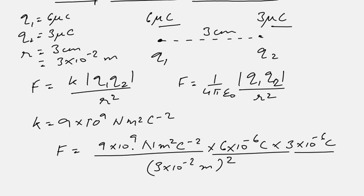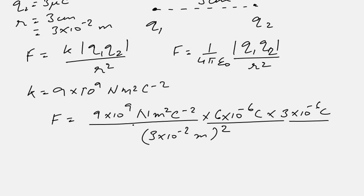Now the first thing is to simplify the units and check whether the resultant unit is the same as the expected unit of the quantity which we are calculating. Simplifying the units, you can see meter squared is in numerator as well as in denominator.